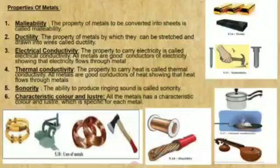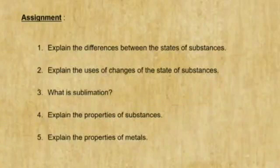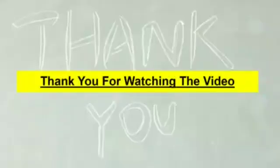The last one is characteristic colour and lustre. Metals have a typical shine or lustre. Every metal has a characteristic colour by which it can be identified. Copy down the following assignment. Thank you for watching the video.